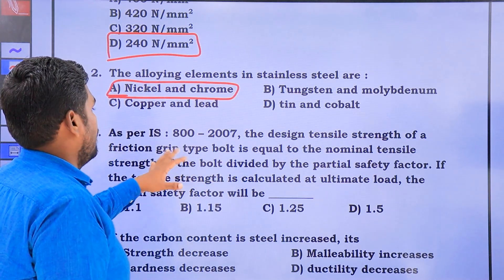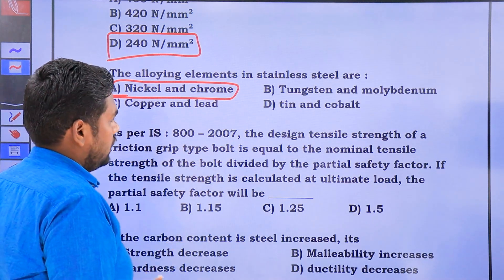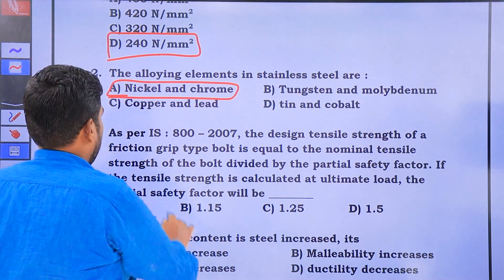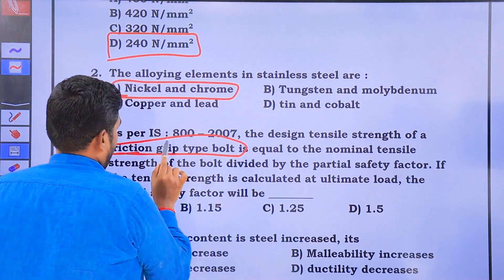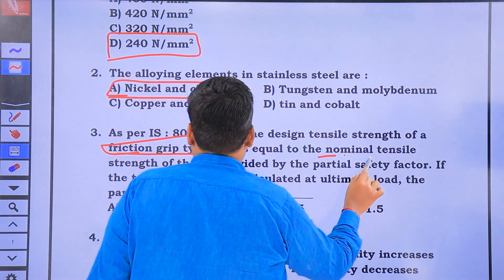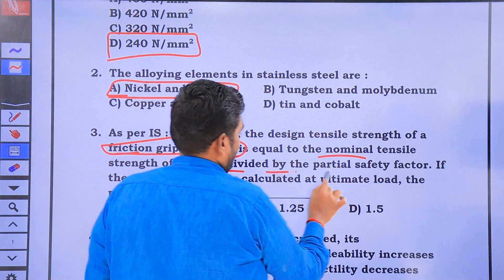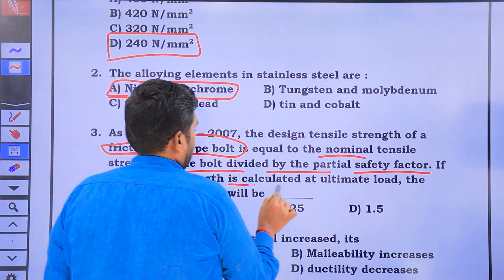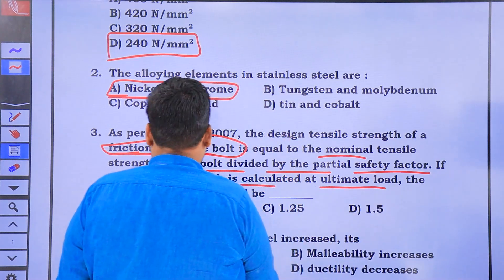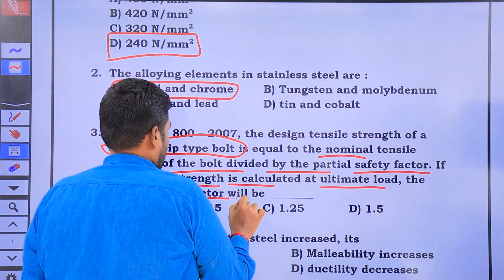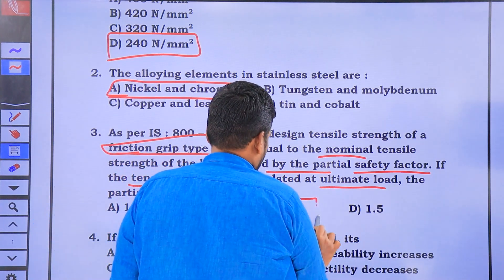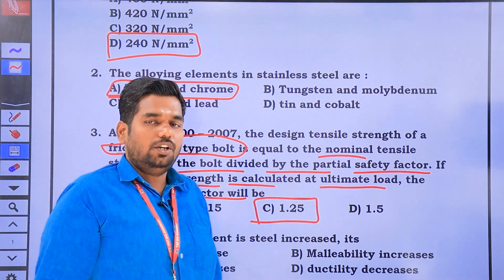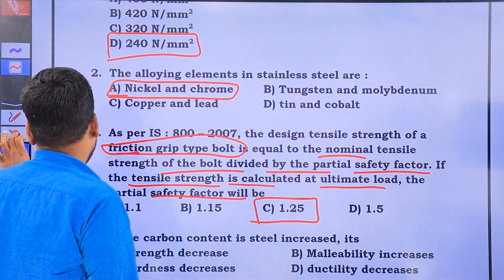As per IS 800-2007, the design strength of the friction grip type bolt is equal to the nominal tensile strength of the bolt divided by the partial factor of safety. If the tensile strength is calculated at the ultimate load, the partial factor of safety for a friction type bolt is 1.25, and for a weld it is 1.5.